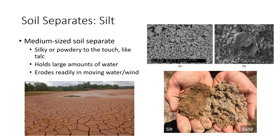Silt is the medium-sized soil separate. Silt particles are silky or powdery to the touch, like talc. Like sand, silt grains do not stick to one another. Of all the soil separates, silt has the best ability to hold large amounts of water in a form plants can use. Silt, however, erodes readily in moving water and wind because of its size and lack of stickiness, which holds clay particles in place.